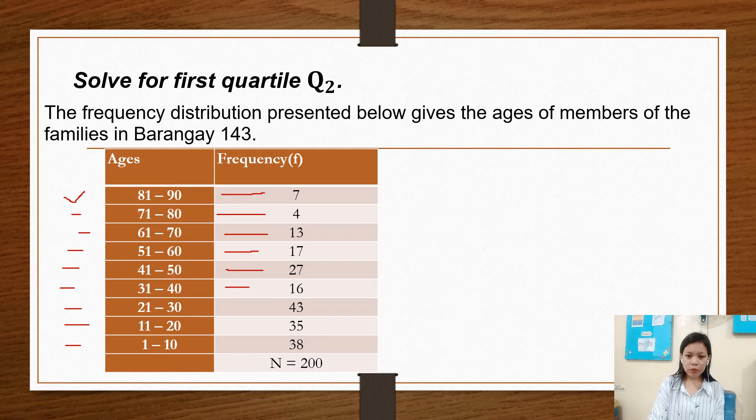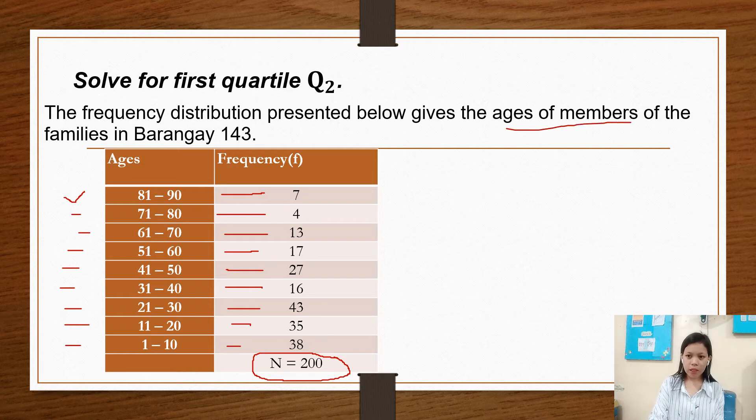And 31 to 40 there are 16, 21 to 30 there are 43, 11 to 20 there are 35, and 1 to 10 there are 38 people, and a total of 200 members age of members.